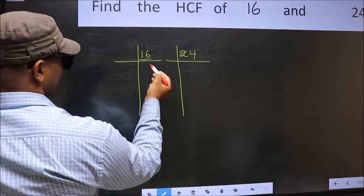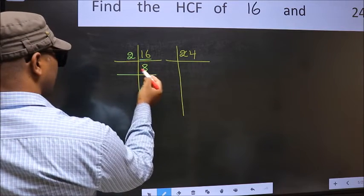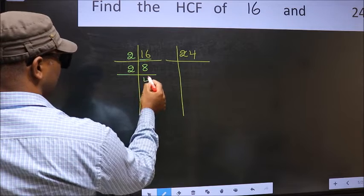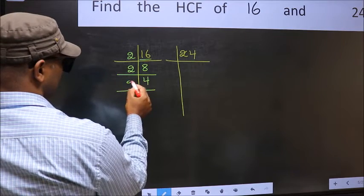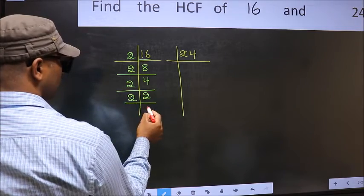Here we have 16. 16 is 2 times 8 equals 16. 8 is 2 times 4 equals 8. 4 is 2 times 2 equals 4. 2 is a prime number, so 2 times 1 equals 2.